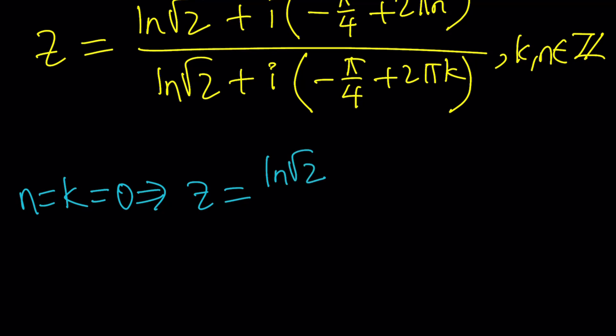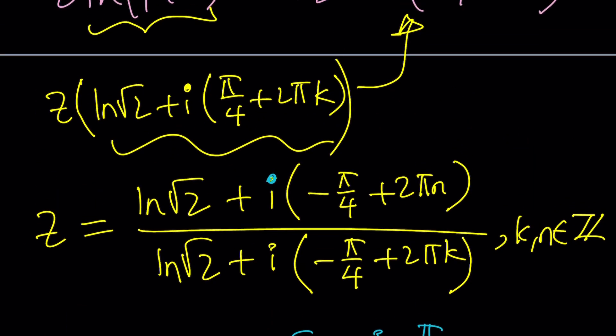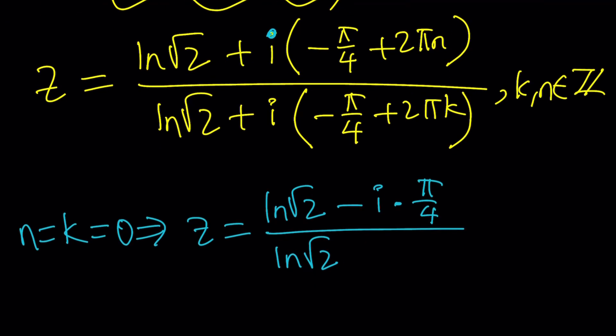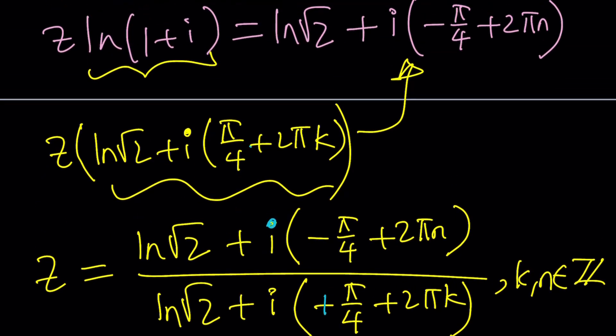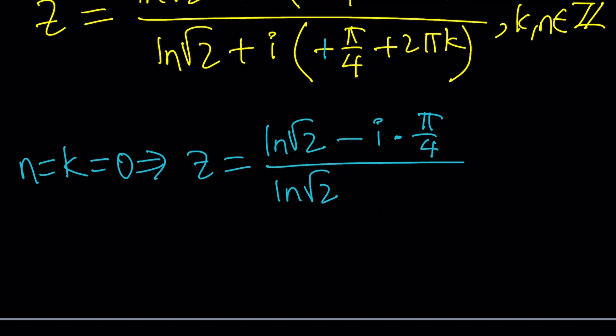LN root 2, and by the way, I'm just going to write this as minus I pi over 4. It just looks a little better. Divided by LN root 2. Wait a minute. I messed up somewhere because not both of these are okay. The bottom is just going to be plus pi over 4, not minus pi over 4. Here we go. That's the denominator, right? Here we go. I just miscopied it. You get the idea. Okay, cool. Now it's going to be plus I pi over 4.